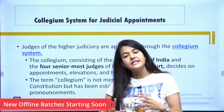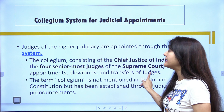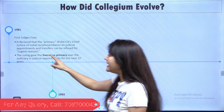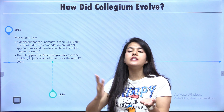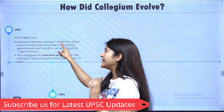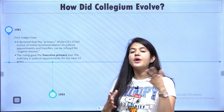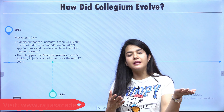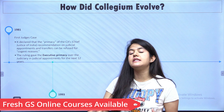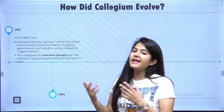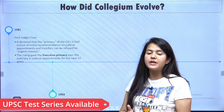Number two: must have served as a judge of a High Court for at least 5 years, or two such courts in succession. Alternatively, must have been an advocate of a High Court for at least 10 years, or two or more such courts in succession. Number three — very important — must be a distinguished jurist in the opinion of the President. This fourth condition is not present for High Court judges, but it exists for Supreme Court judges. Article number to remember: 124.